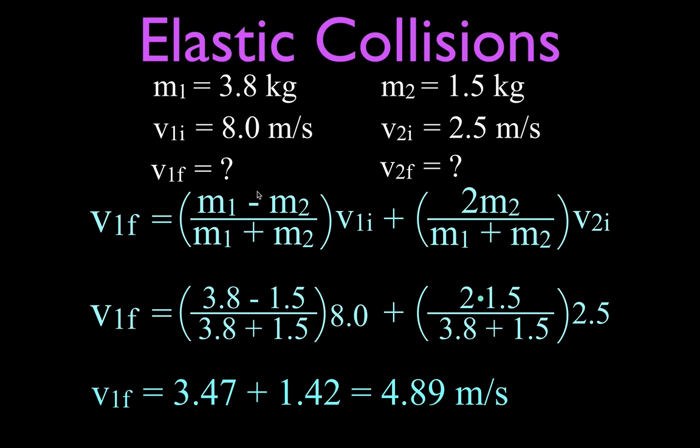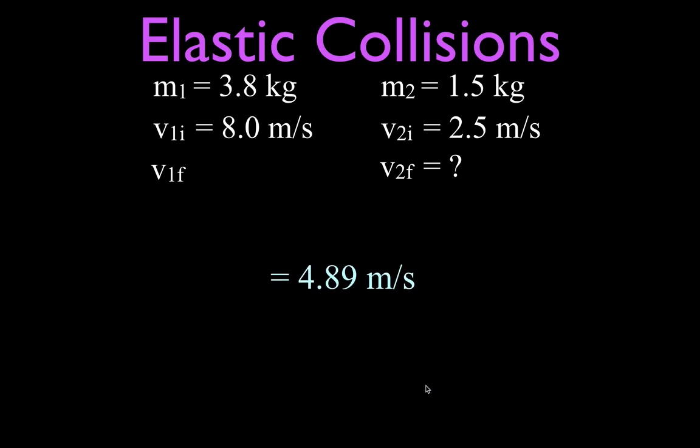That should make a little bit of sense because mass number 1 is moving at 8 meters per second initially. It collides with the second mass and then it's going to slow down a little bit. It's going to give some of its energy to the other mass, mass number 2. So the final velocity for mass number 1 is 4.89 meters per second.